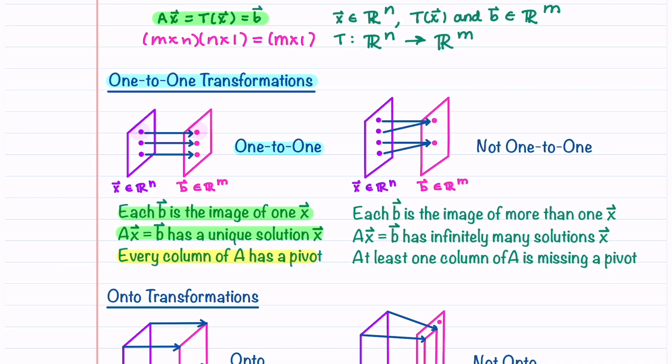If a transformation is not one-to-one, each b is the image of more than one x. This means that Ax equals b has infinitely many solutions x and that at least one column of A is missing a pivot.